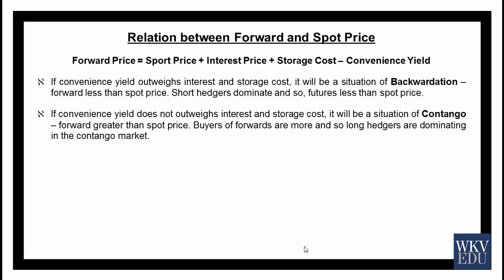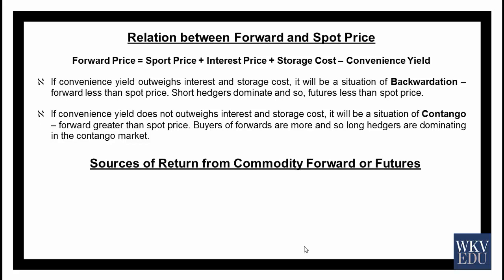There are two kinds of hedges: producers of a commodity and consumers of a commodity. Producers are afraid of prices falling and so they sell futures — this is known as a short hedge. Consumers are afraid of prices rising and so they go long on futures — this is known as a long hedge.